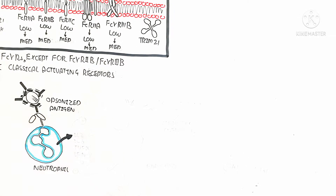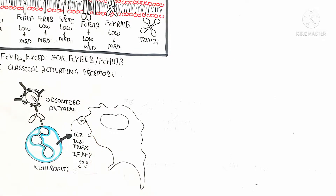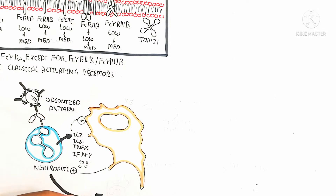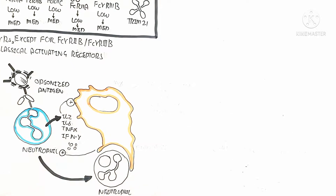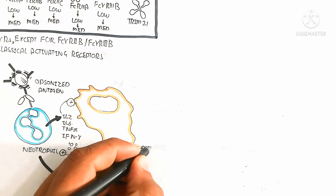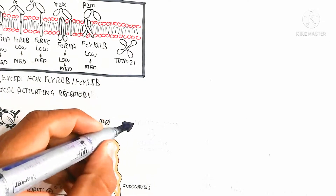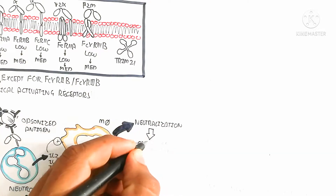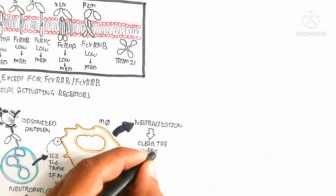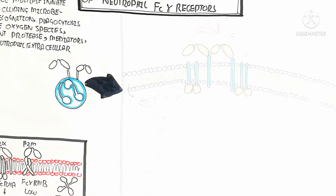The neutrophil detects opsonized antigen through the Fc portion via Fc gamma receptor. The antigen is engulfed and endocytosed to neutralize it, producing IL-2, IL-6, tumor necrosis factor alpha, and interferon gamma. These cytokines are used for positive chemotactic movement of macrophages for endocytosis of the neutrophil after it has digested and neutralized the opsonized antigen, clearing the infection.